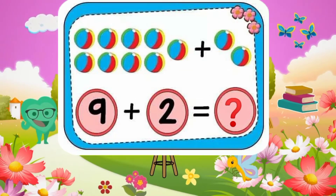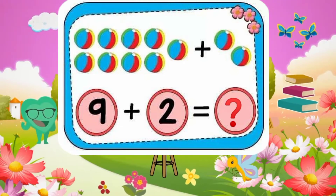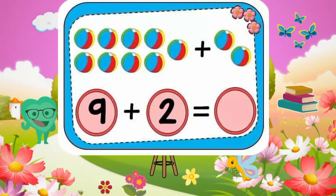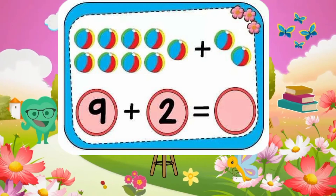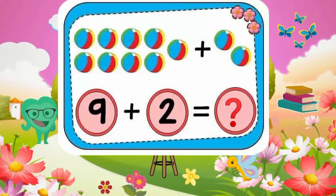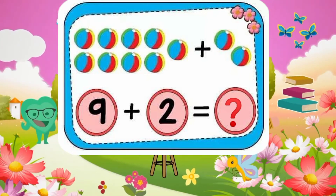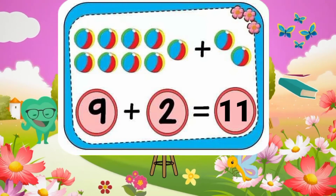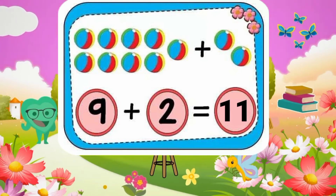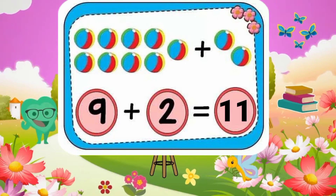9 plus 2 equals what? 9 plus 2 equals 11. Excellent.